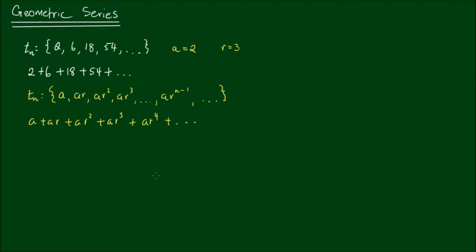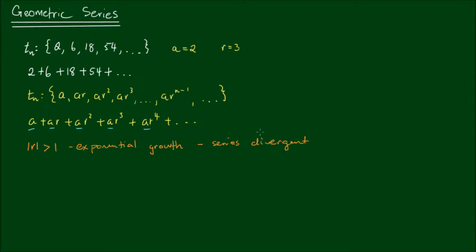In my video introducing geometric sequences, which I'll link up in the top left-hand corner at the end of the video, I listed a few properties. One of them is: if the absolute value of the common ratio is greater than one, the sequence will display exponential growth, and that means the series will be divergent. What that means is the series will not add up to a finite value, because every one of these terms is getting larger and larger. So if we keep adding numbers that are getting larger and larger, we're going to sum to an arbitrarily large number — effectively infinity.